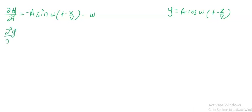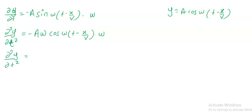The second order partial derivative with respect to t: this is equal to negative A omega. Derivative of sine is cosine, so we get negative A omega squared times cos of omega times (t minus x by v). So dou square y divided by dou t square equals negative A omega square cos of omega times (t minus x by v). Let us call this equation number 2.